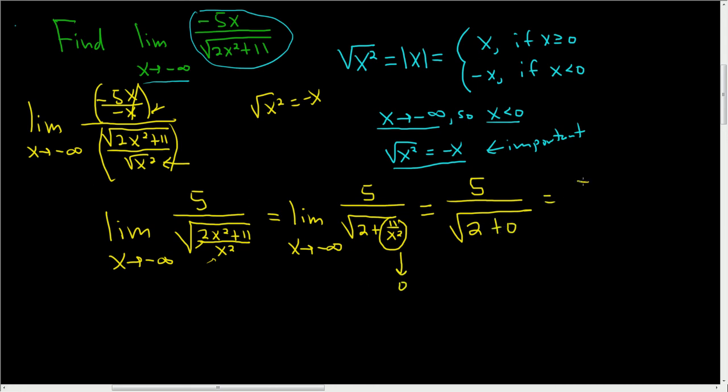so we end up with 5 over the square root of 2, and I suppose you could rationalize, but that is a perfectly acceptable correct answer. I hope this helps.